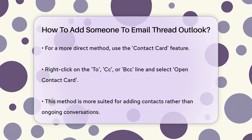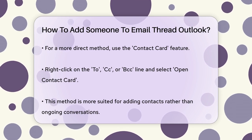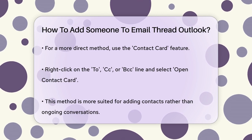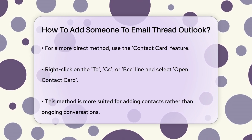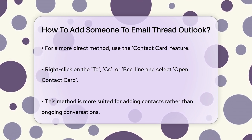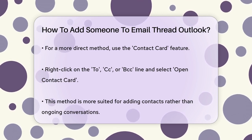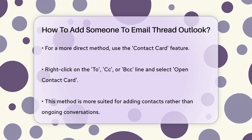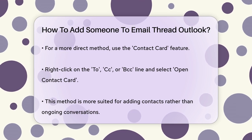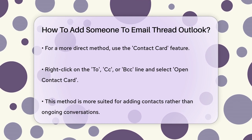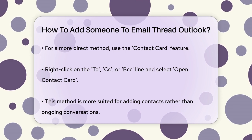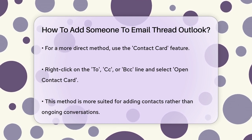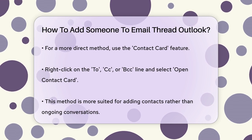If you prefer a more direct approach, you can also use the contact card method. Right-click on the To, CC, or BCC line, select Open Contact Card, and then add the new contact from there. However, this method is more about adding contacts rather than quickly adding someone to an ongoing conversation.